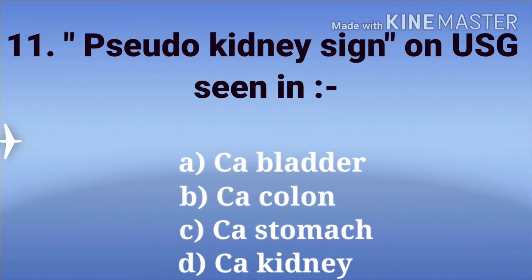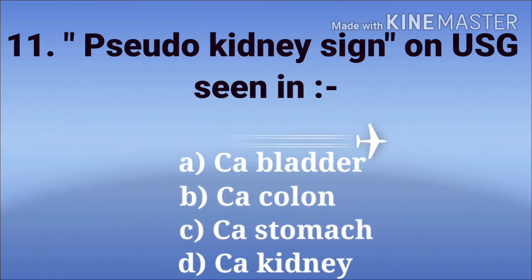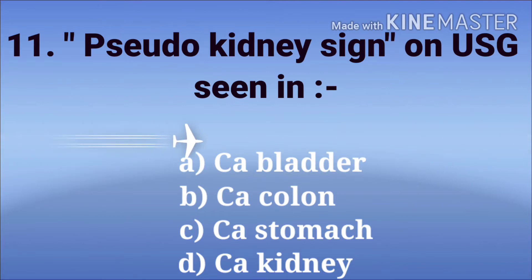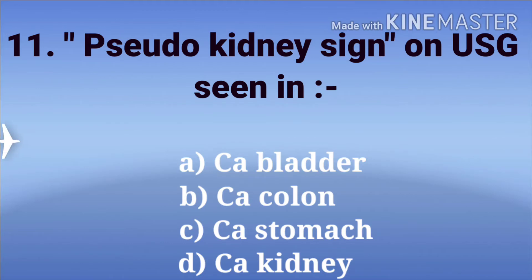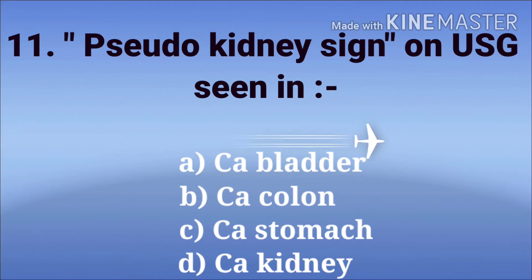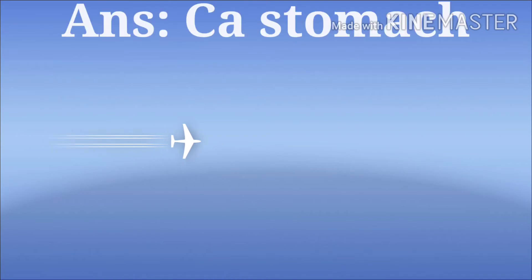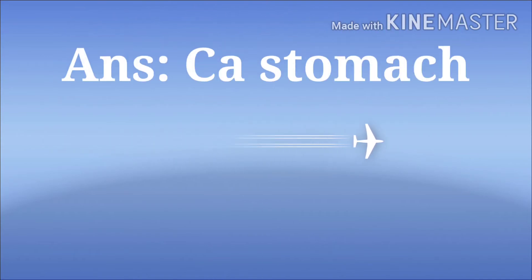Pseudo-kidney sign on ultrasound seen in. The options are CA bladder, CA colon, CA stomach, and CA kidney. The answer is CA stomach.